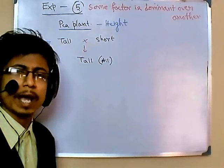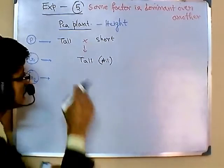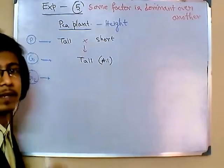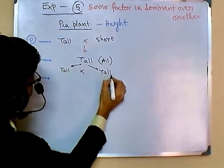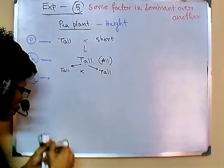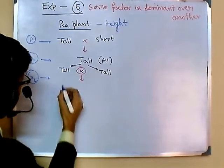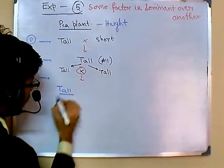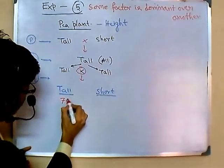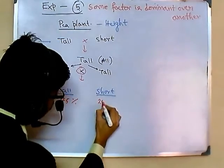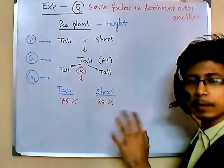It was kind of shocking to him — why was that happening? Out of curiosity, he took two plants from generation one and cross-fertilized or self-fertilized them. He took one tall plant from generation one and crossed it with another tall from generation one. After this cross he got generation two, where he got both tall plants and short plants — 75 percent of the plants were tall and 25 percent were short.